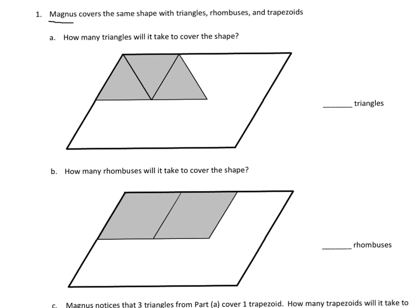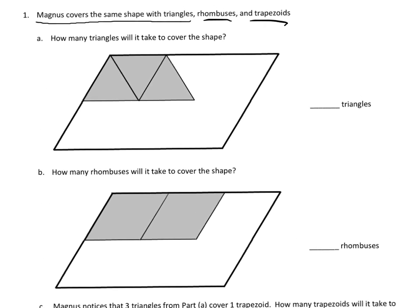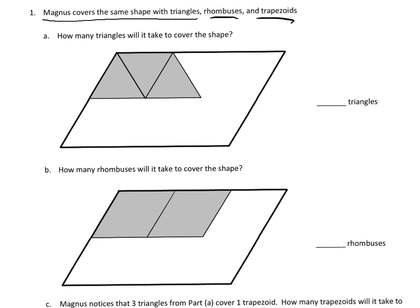In this problem, it says Magnus covers the same shape with triangles, rhombuses, and trapezoids. That's basically what all of these are asking us about. Step A, or problem A, how many triangles will it take to cover the shape? So the idea would be, we're going to imagine roughly how many triangles would it take to fill in this entire figure.